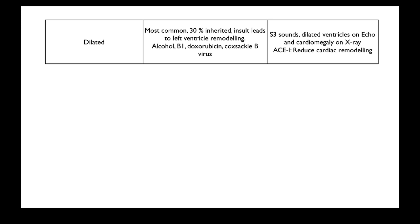Treatment includes ACE inhibitors — obviously treat the underlying cause such as alcohol disease or thiamine B1 deficiency — but ACE inhibitors have been shown to reduce the amount of cardiac remodeling. This is a key benefit of ACE inhibitors, as most other cardiac medications have not been demonstrated to do so. This remodeling is a maladaptive response and unfortunately carries a very poor prognosis once you have dilated cardiomyopathy with congestive heart failure.